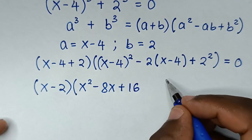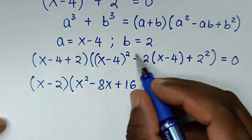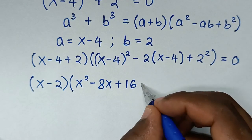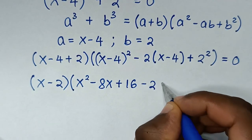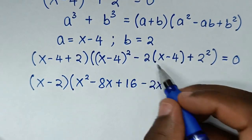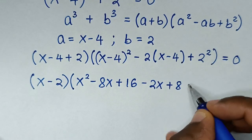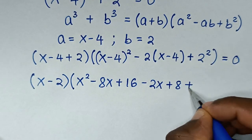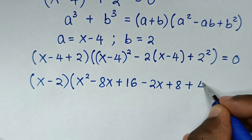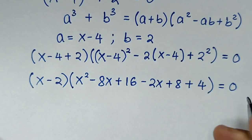Opening the bracket with -2: negative 2 times x is -2x, and negative 2 times negative 4 is positive 8. Plus 2² = 4. The expression equals 0.